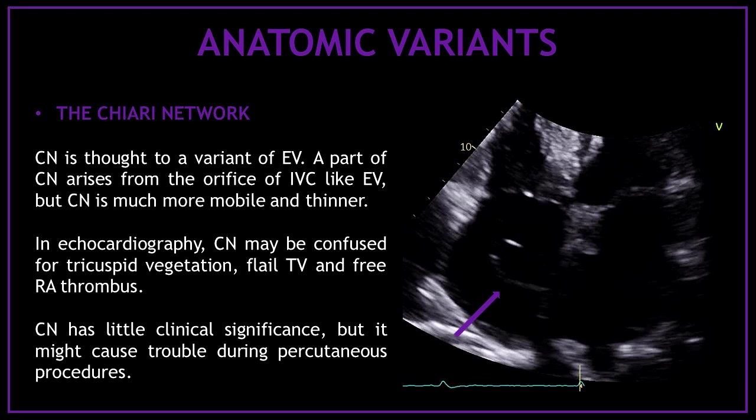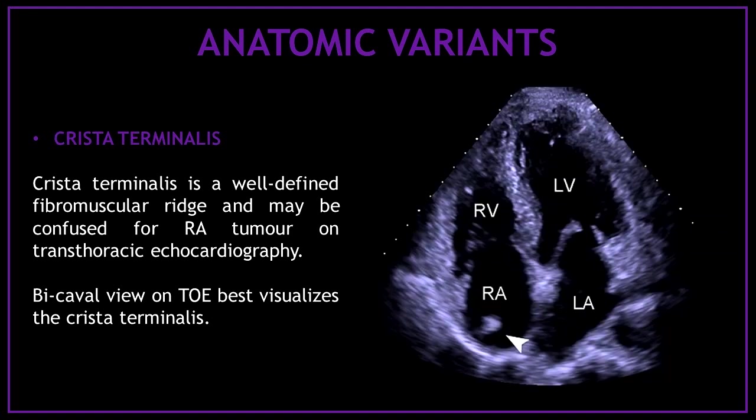The Chiari network has little clinical significance, but it might cause trouble during percutaneous procedures. The third most common anatomic variant is the crista terminalis, a well-defined fibromuscular ridge that may be confused for a right atrial tumor on transthoracic echocardiography. The bicaval view on transesophageal echo best visualizes the crista terminalis.